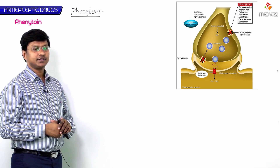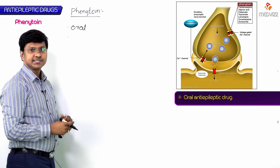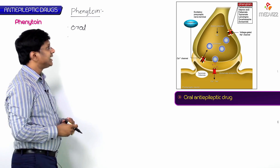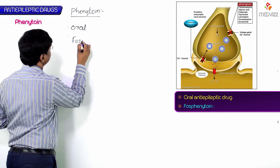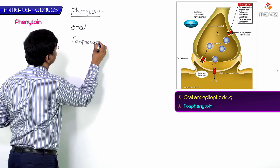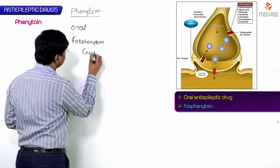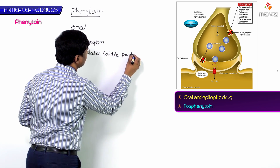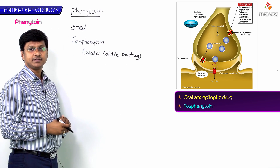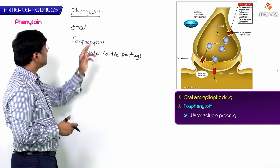Phenytoin is an oral anti-epileptic drug. We have a prodrug of phenytoin called fosphenytoin, which is a water-soluble prodrug of phenytoin.